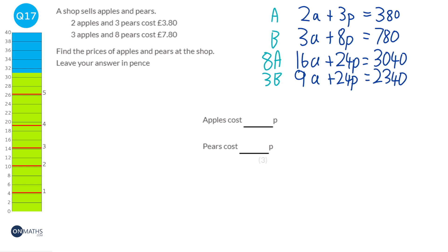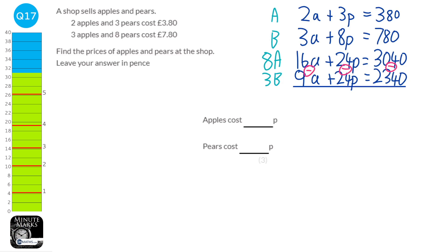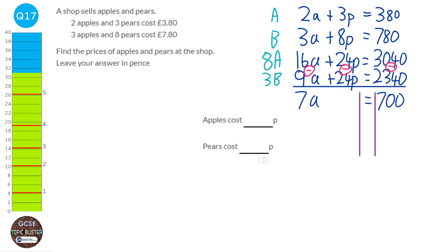Since the P coefficients are the same, we subtract the equations. Same signs means subtract. 16A minus 9A equals 7A, 24P minus 24P cancels, and 3040 minus 2340 equals 700. So 7A equals 700, and dividing both sides by 7 gives A equals 100. So an apple costs 100 pence, or £1.